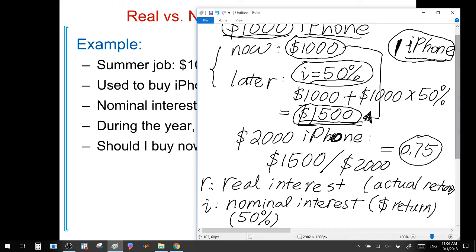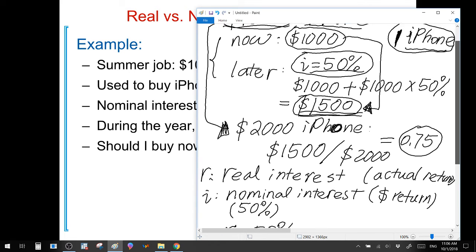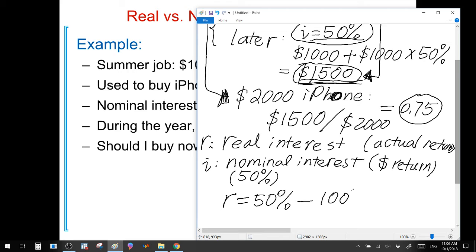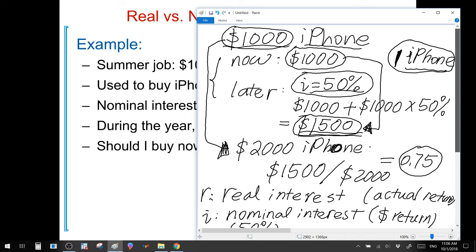Because the real return is equal to the nominal return 50%, subtract how much price level has gone up over time. In this example, saving the money in the bank, our saving is going to grow by 50% over the course of one year. However, during the same period, the price of iPhone increased from $1,000 to $2,000, or there is 100% increase in the price level. Subtracting the increase in price level from the nominal interest gives us the real return, which is negative 50%, meaning that if we postpone our purchasing decision, our affordability for iPhone actually drops instead of rising.